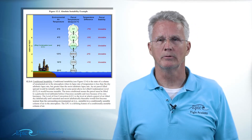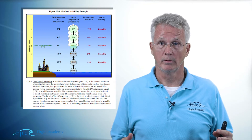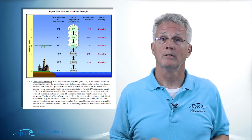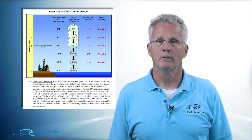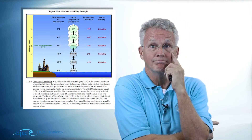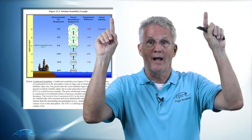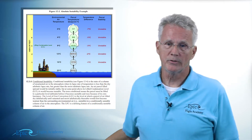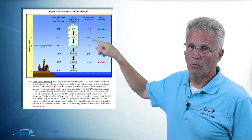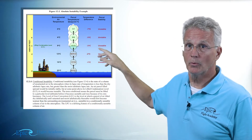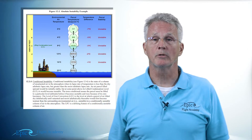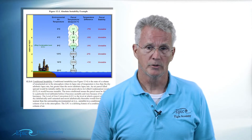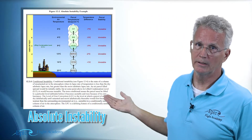Those negative numbers mean the surrounding air is cooler than that air parcel, even while the air parcel cools adiabatically. So if that air parcel is warmer than the surrounding air — even though it's cooling adiabatically — what's it going to want to do? If you said rise, you're correct. Warm air wants to rise. Notice in 12-3 the cloud has ruffled edges, depicting what we call a cumuliform cloud. This chart shows us absolute instability.